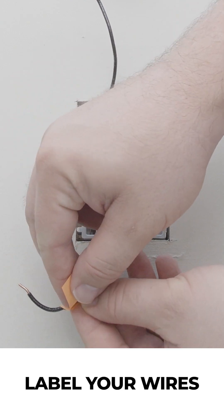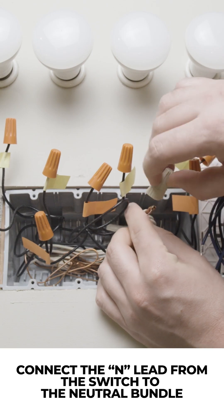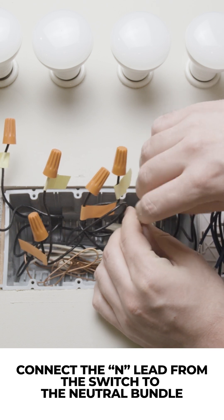Label your wires. Connect the N lead of the IOTI switch to the neutral bundle.